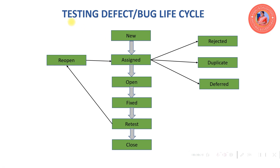First of all, bugs are defects. We have bugs and defects. When we have a customer requirement, the application functionality will be added to the test pass. If the expected result and actual result are the same, the test case will pass. If the expected result and actual result are different, we say the bug is logged. Whenever there is a deviation in customer requirement with respect to application functionality, then we can log a defect.